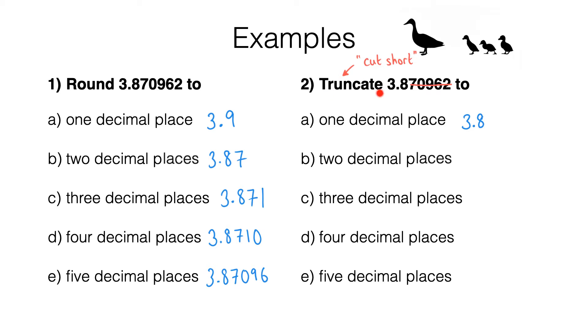To truncate this number to two decimal places for part B, we simply cut off all digits after the second decimal place—everything from the zero onwards—leaving us with 3.87. Pause the video and try truncating this decimal to three, four, and five decimal places.